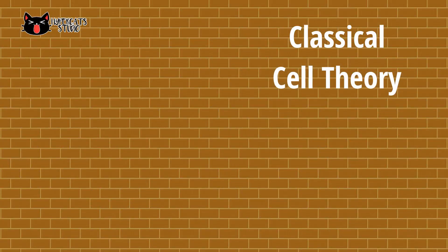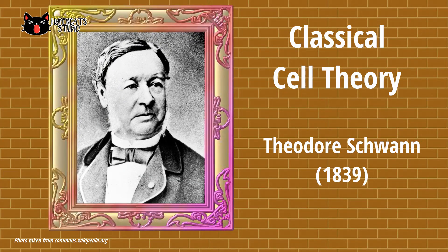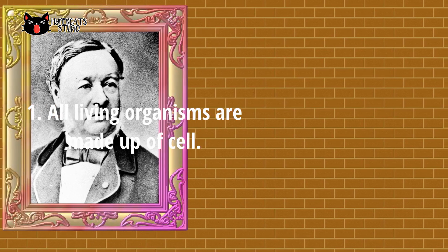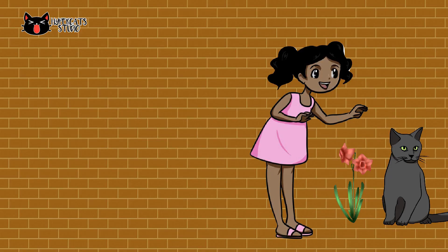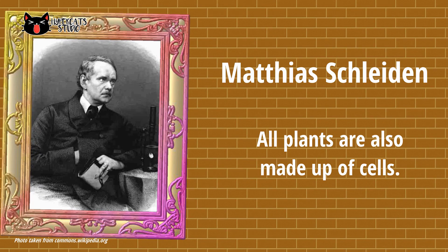Classical cell theory was proposed by Theodor Schwann in 1839. He proposed three conclusions on his theory. The first states that all living organisms are made of cells. Schwann compared his discovery that animals are composed of cells to the discovery of Matthias Schleiden that plants are also composed of cells.